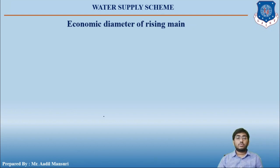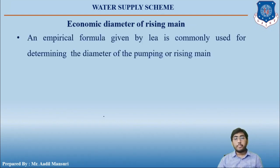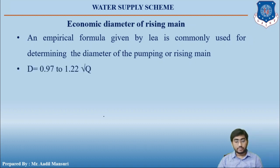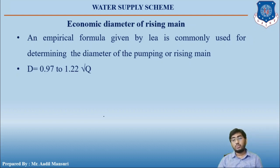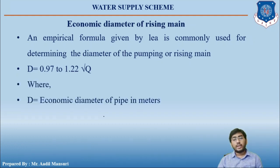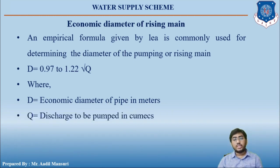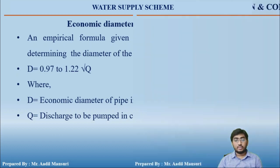For optimum efficiency, it is necessary to design the diameter of the pumping main so that the overall cost — both initial and maintenance — is economical. The diameter that provides this optimum condition is known as the economic diameter. An empirical formula given by Lee is commonly used: d = 0.97 to 1.22 × √Q, where d is the economic diameter in meters and Q is the discharge in m³/s.